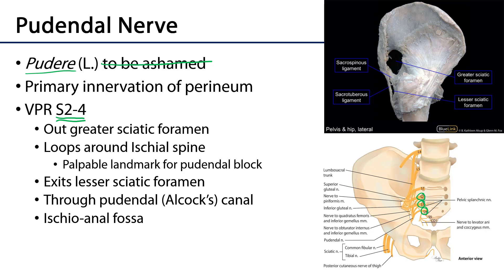We can see the branches of S2, S3, and S4 coming together. They exit through the greater sciatic foramen, then wrap around the sacrospinous ligament — running from the ischial spine out to the sacrum — and enter into the pudendal canal through the lesser sciatic foramen. It's important to mention this relationship because the ischial spine is a very important landmark for a pudendal nerve block.